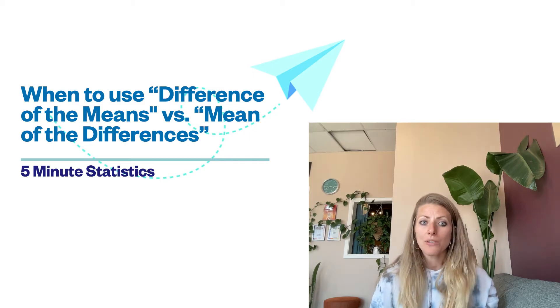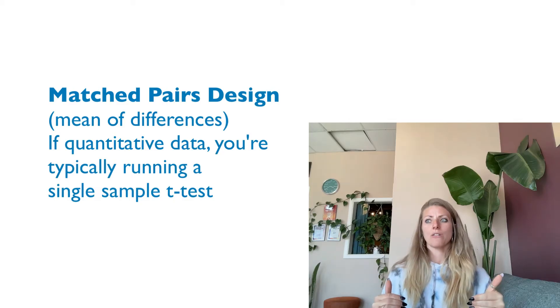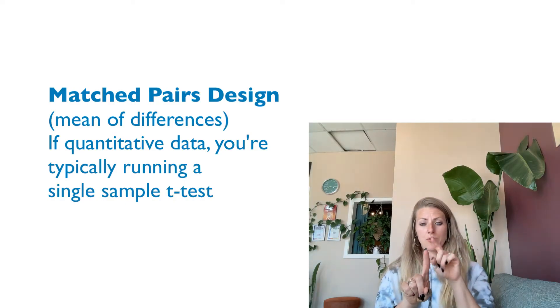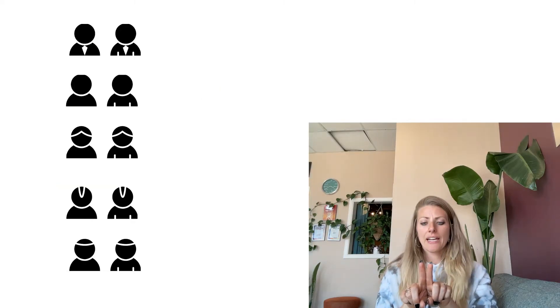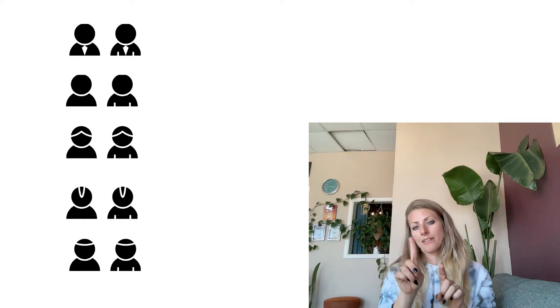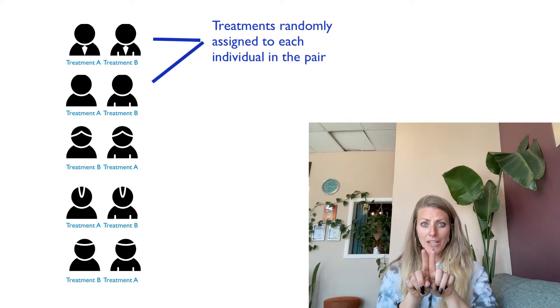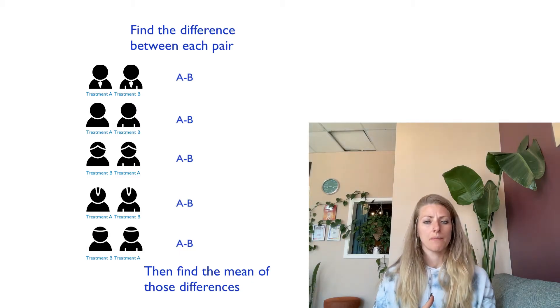Sometimes it's not even possible to do the mean of a difference, which is a matched pairs design. In a matched pairs design, what you actually do is have subjects that are either the same subject treated twice, or two subjects that are very, very similar — one in the treatment group and one in the placebo group — and then compare the difference between the two. The benefit is you get to control for variables that are typically confounded in the two-sample test, which would be the difference of the means.